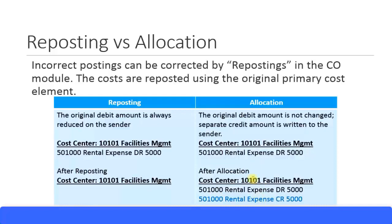The second difference is that allocation is used during the periodic cycle — it's an intended transaction where you allocate amounts monthly. Whereas reposting is used very rarely, only when you actually make an error. In that case, within the CO module you can simply repost the cost from one cost center to another using the reposting transaction.